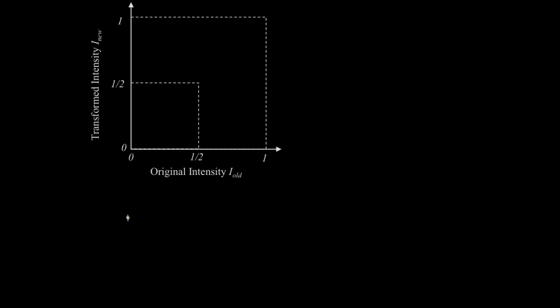Let's take a look at what this transformation might look like. Now we have normalized intensities. Once we've divided by the maximum value the intensities can take, our original intensity that I'm calling I_old ranges from 0 to 1. The transformed intensity also ranges from 0 to 1.